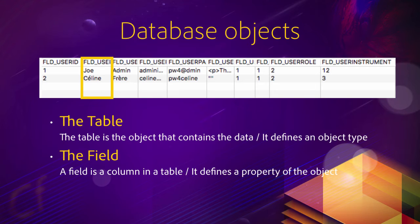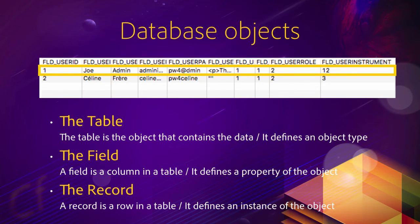The user object has different properties: it has an ID, a first name, a last name, an email, a password, et cetera. So each column of that table is a field in database vocabulary, and it describes a property of the user object. In such a table, we have columns and we also have rows. A row in database language is called a record, so a record is a row in the table.